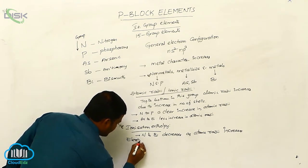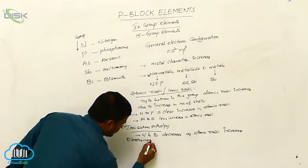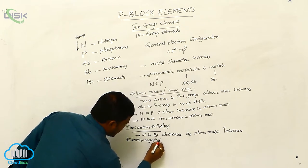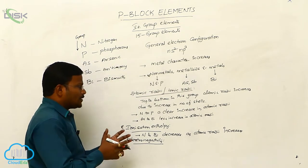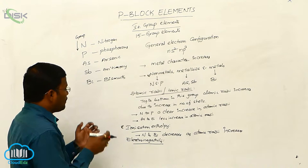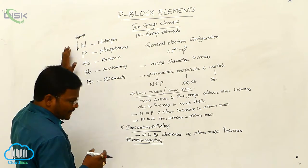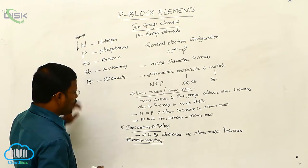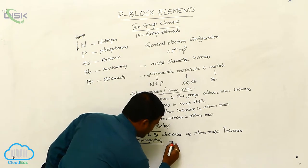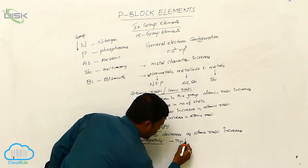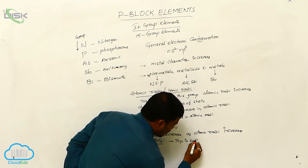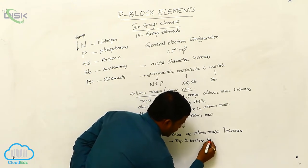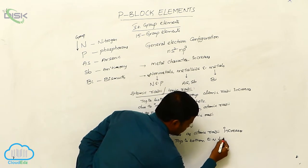Next is electronegativity. The capacity of an atom to attract electrons or bonded electrons is called electronegativity. From top to bottom — that is, from nitrogen to bismuth — electronegativity decreases.